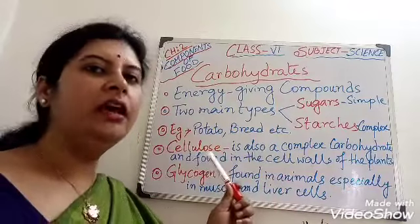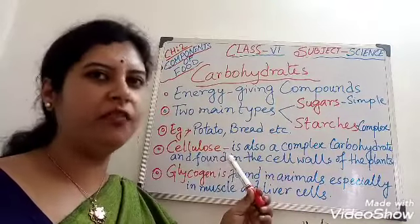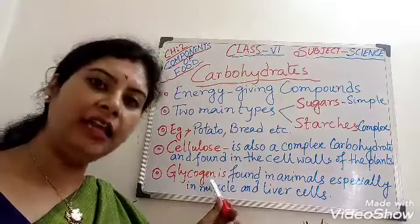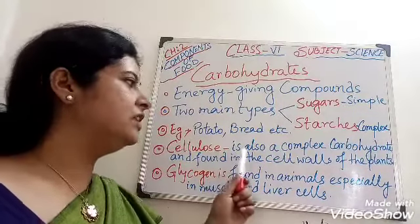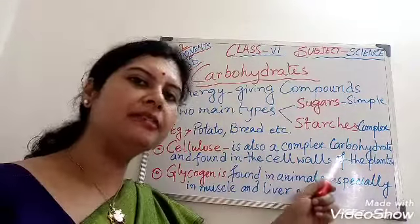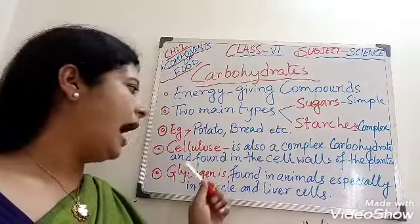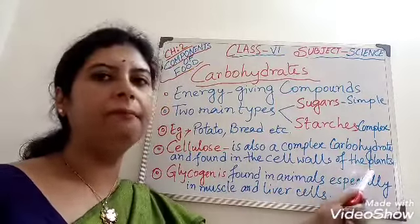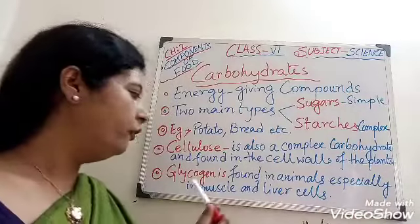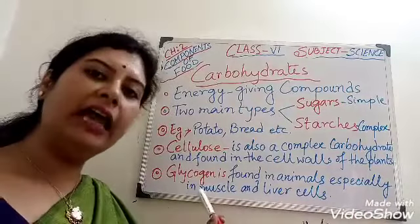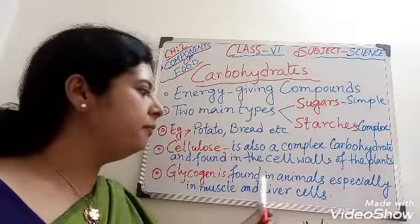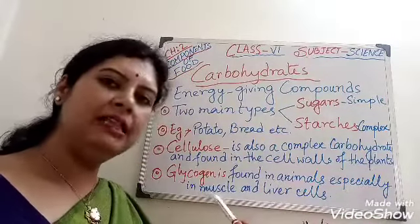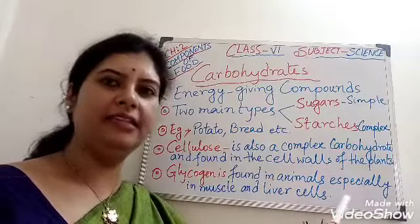Next, an important note on cellulose and glycogen. Cellulose is also a complex carbohydrate and is found in the cell wall of plants. Whereas glycogen is formed in animals, especially in muscle and liver cells.